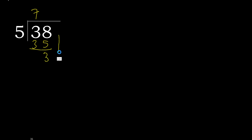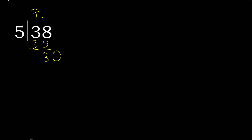The next digit is not a number, therefore complete with 0 here with a point. 0 point 30. 5 multiplied by 6 is 30.